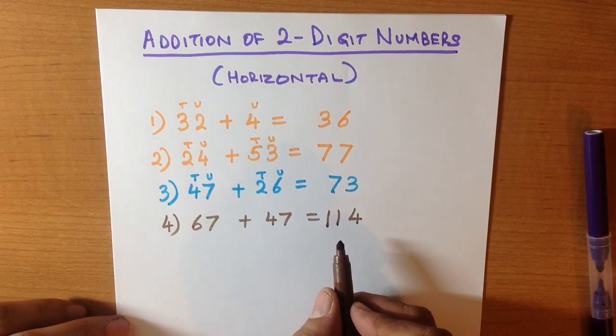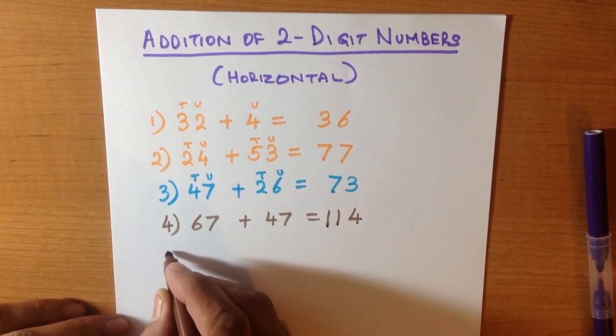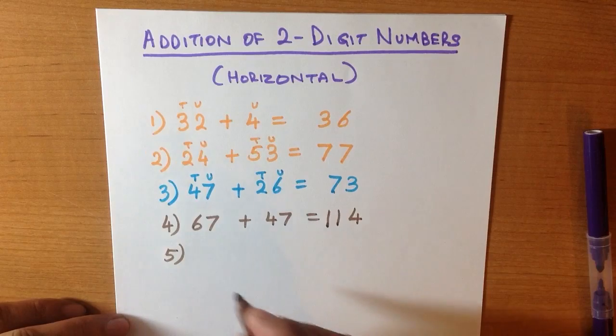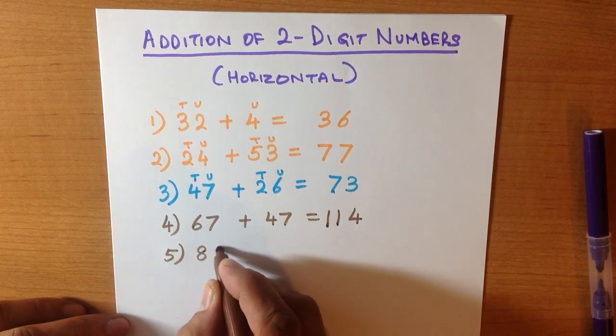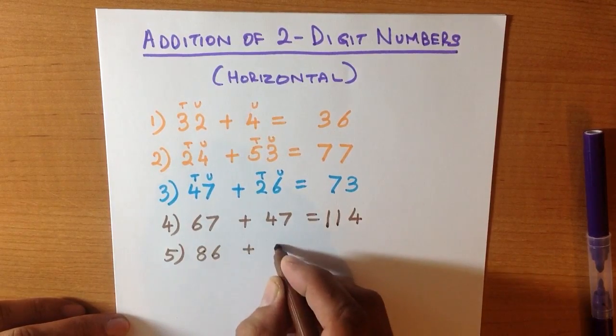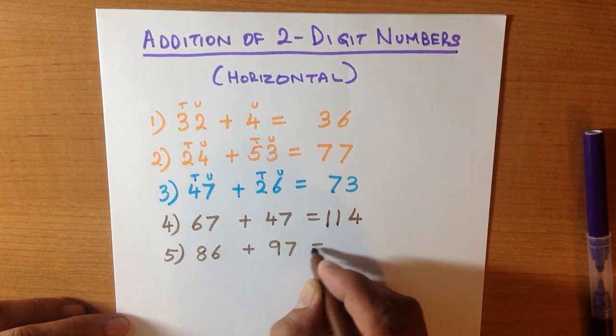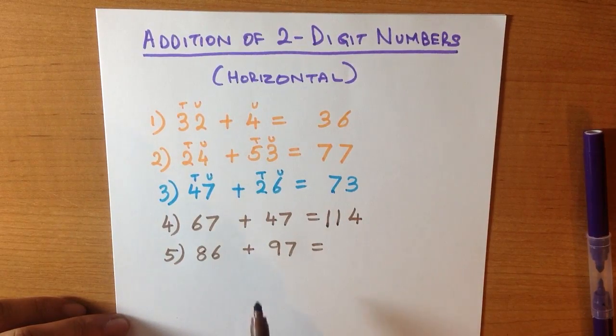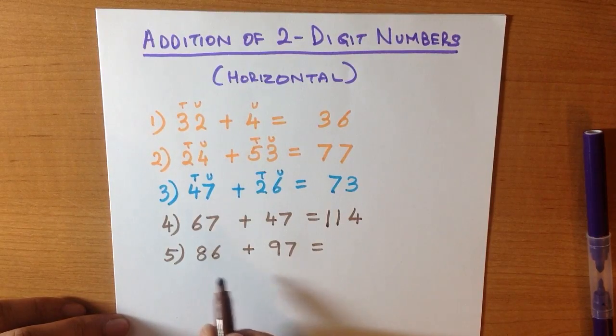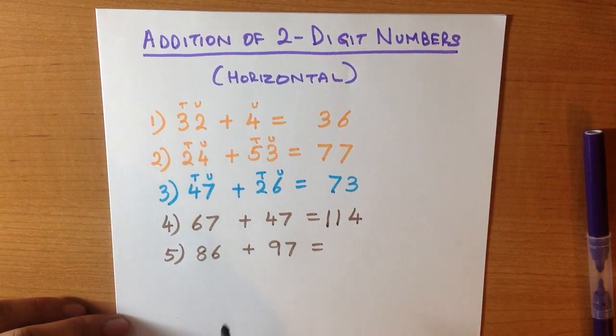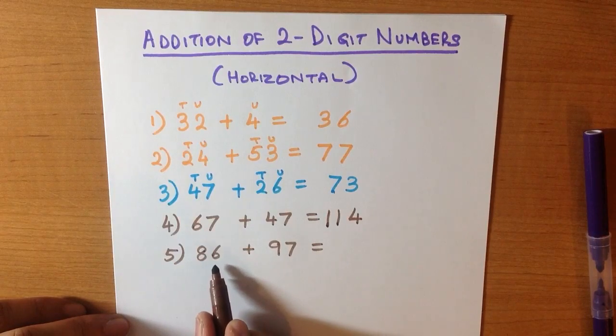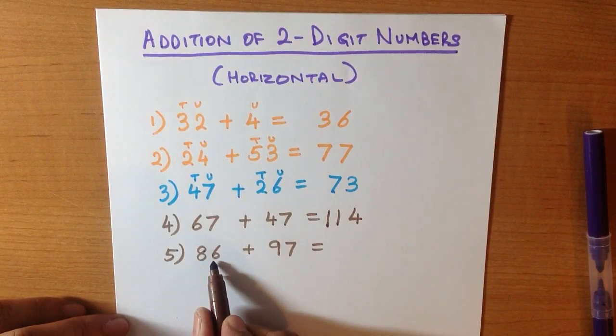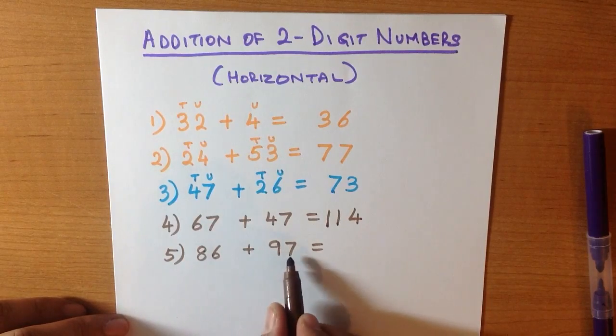That was quite easy, wasn't it? Let's work through one more where the numbers are even larger: 86 plus 97. Now again, the same principle applies. Don't get frightened by the larger numbers. It's the same principle. Let's add the digit on the right hand side first, the units. So what is 6 plus 7?